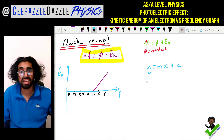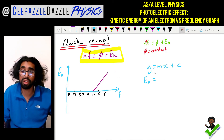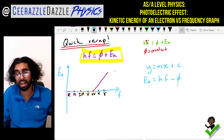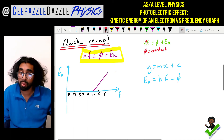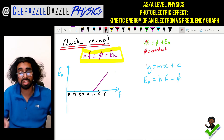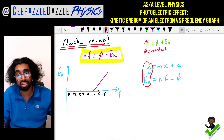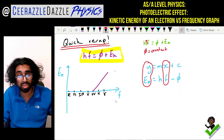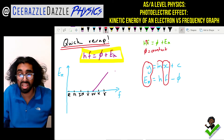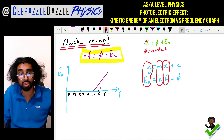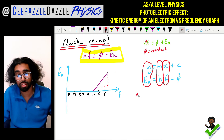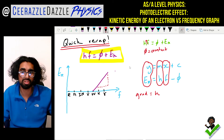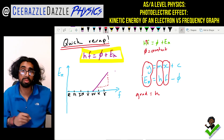Ek is equal to HF minus phi. Now we can relate the different parts of the straight line equation to the physics equation. On the y-axis we plot kinetic energy, and on the x-axis we plot frequency. The gradient of this line will therefore be equal to Planck's constant H, which makes sense because Planck's constant is indeed a constant. So the gradient of a kinetic energy versus frequency graph is Planck's constant.